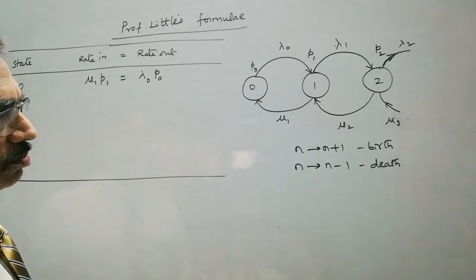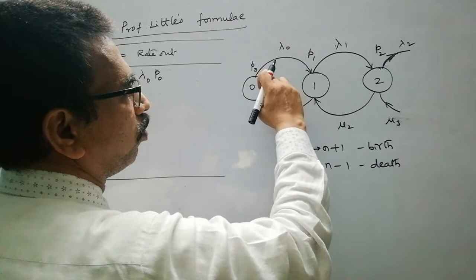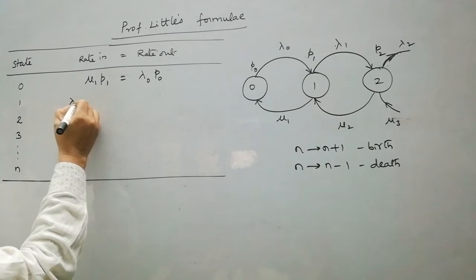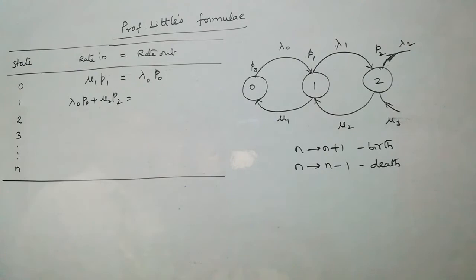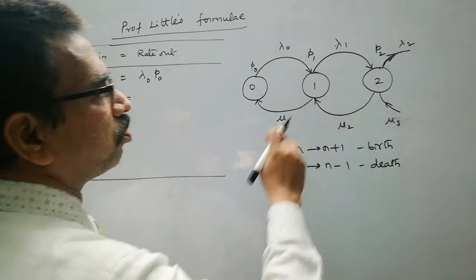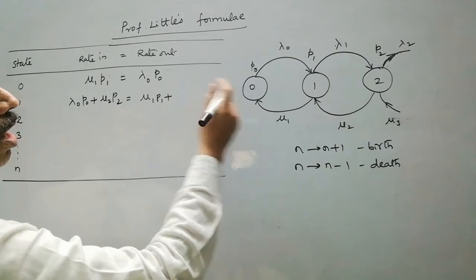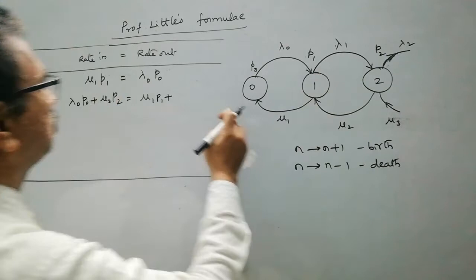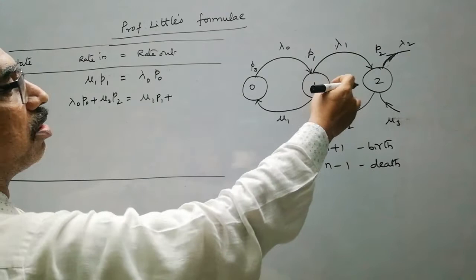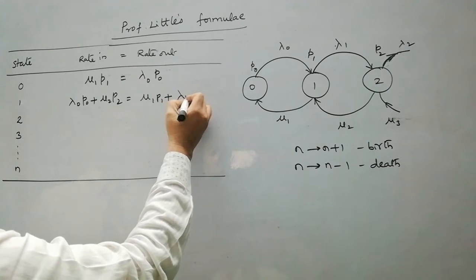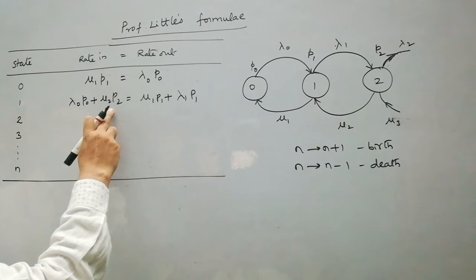Now coming to state 1. The system will reach state 1 in two ways: from 0 to 1 with an arrival, or from 2 to 1 with a service completion. So for rate in, it is λ₀P₀ + μ₂P₂. This equals rate out — the system leaves state 1 to 0 with a service completion, or to 2 with a new arrival. So: λ₀P₀ + μ₂P₂ = μ₁P₁ + λ₁P₁.